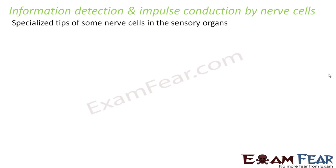Specialized tips of some nerve cells in the sensory organs sense the external stimuli. For example, if there is a tiger, our eyes — which are the sensory organs — see it. The cells of these sensory organs have specialized tips that allow them to sense external stimuli. The information enters the neurons through the dendrites, which receive information from outside. These receptors are present in the sensory organs.